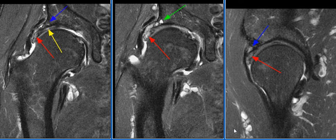This case is an elderly male patient with history of right hip pain. MRI examination of the right hip is performed.